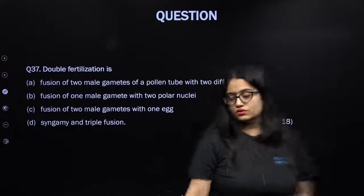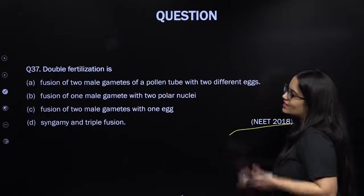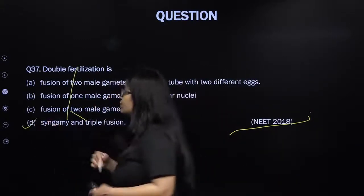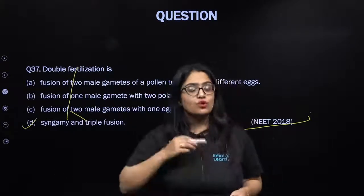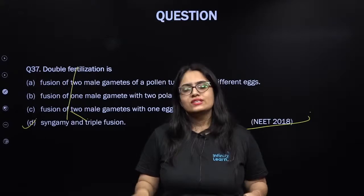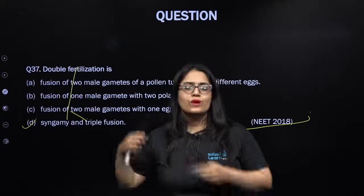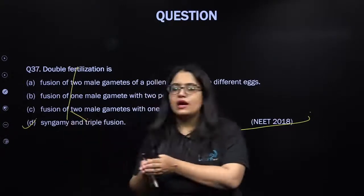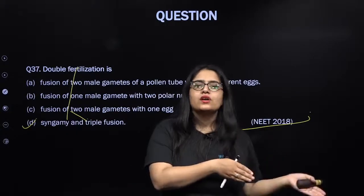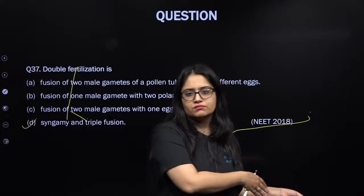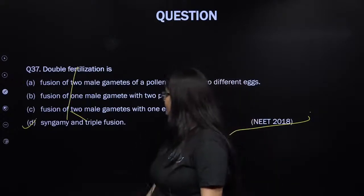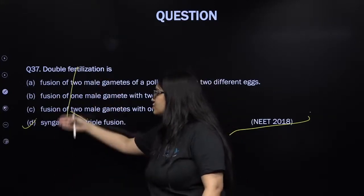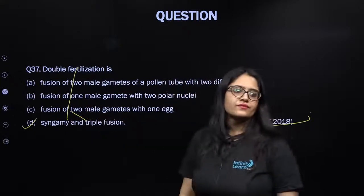From NEET 2018: double fertilization means syngamy plus triple fusion. It is a characteristic feature of angiosperms. It is called double fertilization because two fertilization events occur: first, when male gamete fuses with the egg cell to form zygote (syngamy); second, when one male gamete fuses with the polar nuclei in the central cell to form the primary endosperm nucleus (triple fusion, because three nuclei are involved — one male gamete and two polar nuclei).